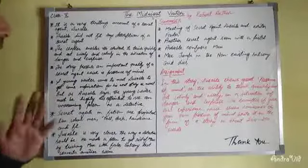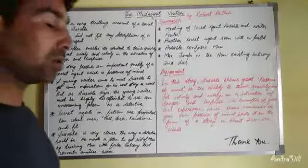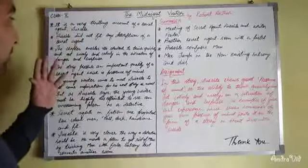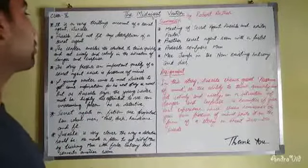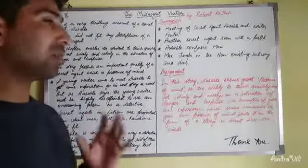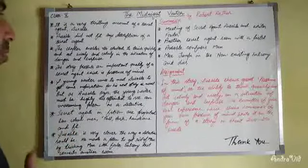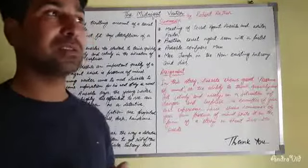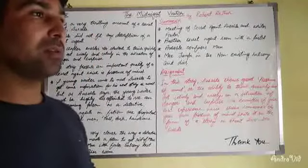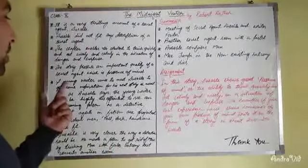Ozabel does not fit the typical description of a secret agent. Secret agents are typically tall, dark, well-built, and muscular, but Ozabel is a stout, fat man who does not match that description. The chapter enables students to think quickly and act wisely in situations of danger and surprise — just as Ozabel thinks calmly and wisely. It presents the important quality of presence of mind, which is a core duty of any detective.